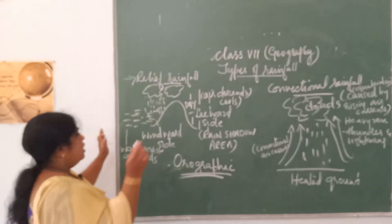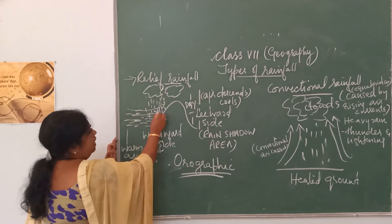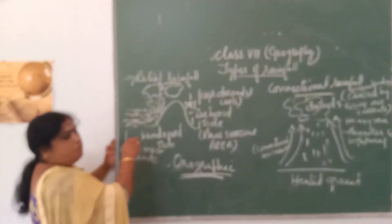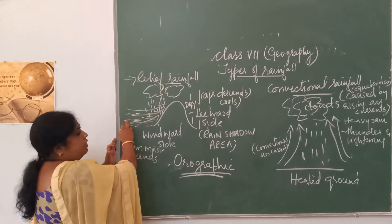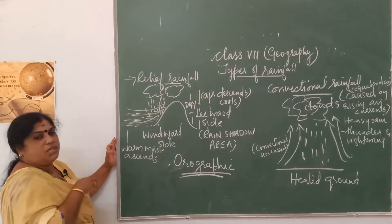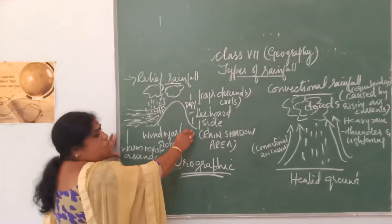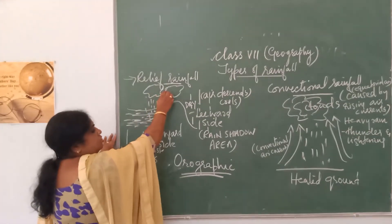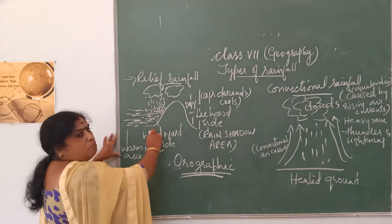As seen in this picture, wind blowing from the sea towards the land is being blocked by very huge mountain ranges. This is the most popular way of rainfall which occurs in most parts of the country. Wind blows from sea to land as moisture-laden winds. When these moisture-laden winds are blocked by mountains, they rise higher up into the atmosphere where they condense and fall back down to the earth in the form of rainfall.